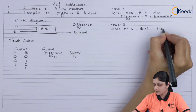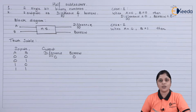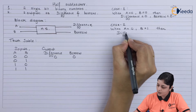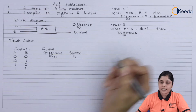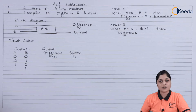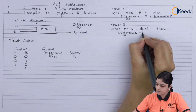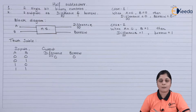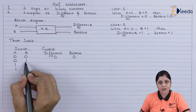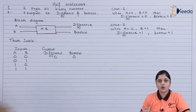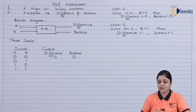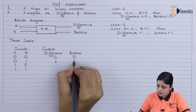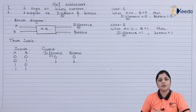For Case 2, the difference is 1 and borrow is 1, because 0 minus 1 gives 1 but borrow must be 1. So the output is 1 and 1 at the output side.